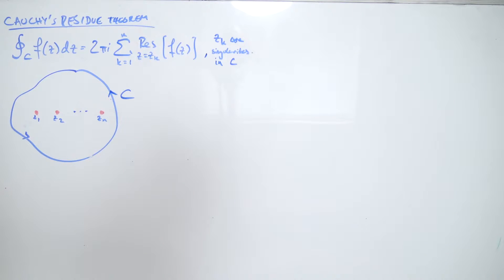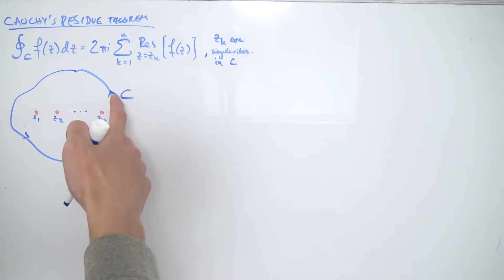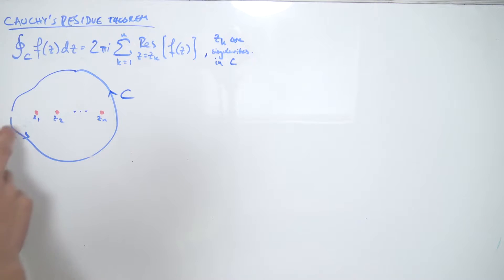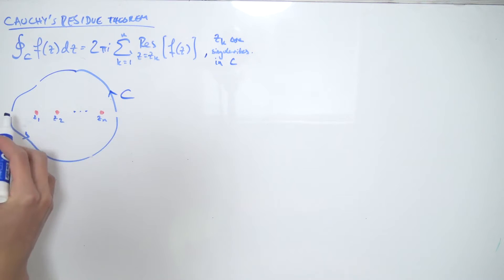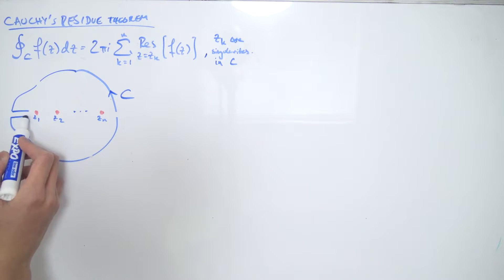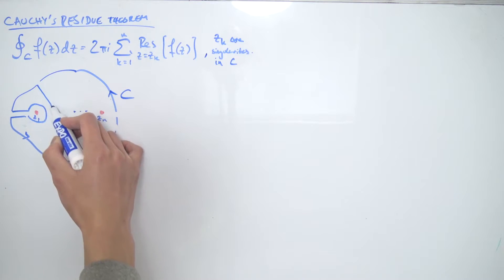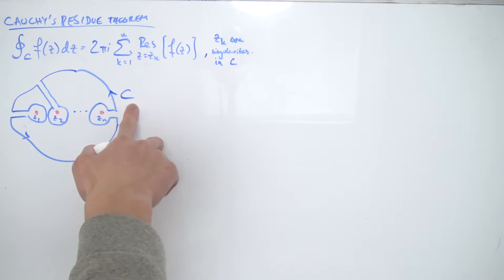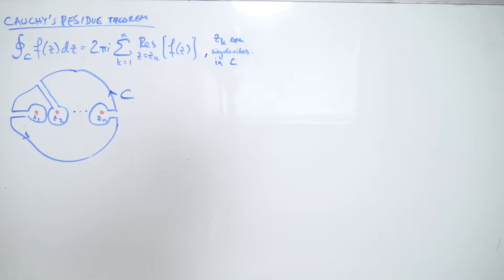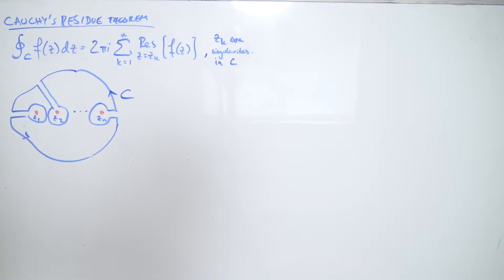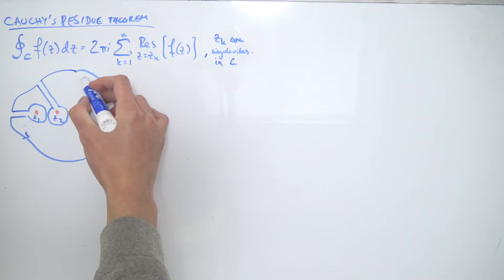So if we know what our poles are inside this contour, we can easily figure out what the contour integral over C is using this expression, which is what I'm going to be proving. What I want to do is instead of taking a whole loop around C, take a visit to each of these singularities by making cuts inside our contour and constructing little paths that lead into each singularity and make a little loop around them. This new contour we've constructed we'll call Psi.